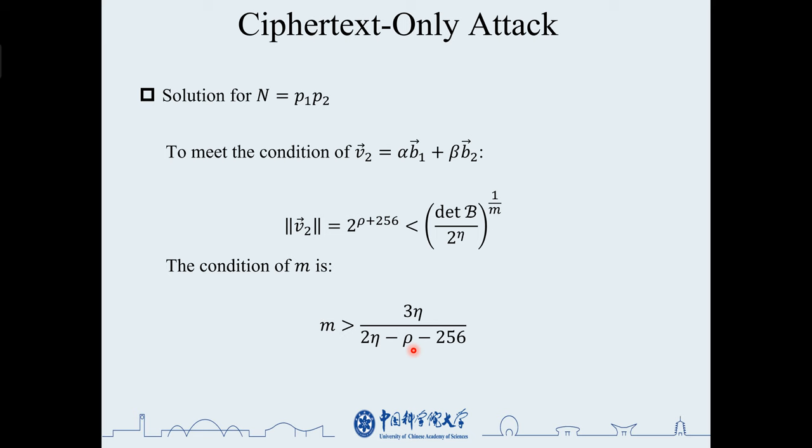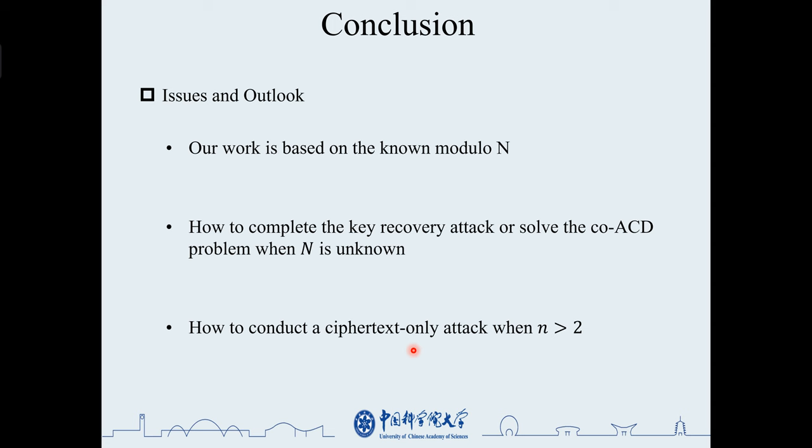Finally, a few words about the problems and the prospects of this study. The attacks we performed are based on the known n, but the CLS scheme doesn't require a public n. Therefore, we would like to study how to complete the key recovery attack or solve the co-ACD problem when n is unknown, and when n greater than 2, how to conduct a ciphertext-only attack.